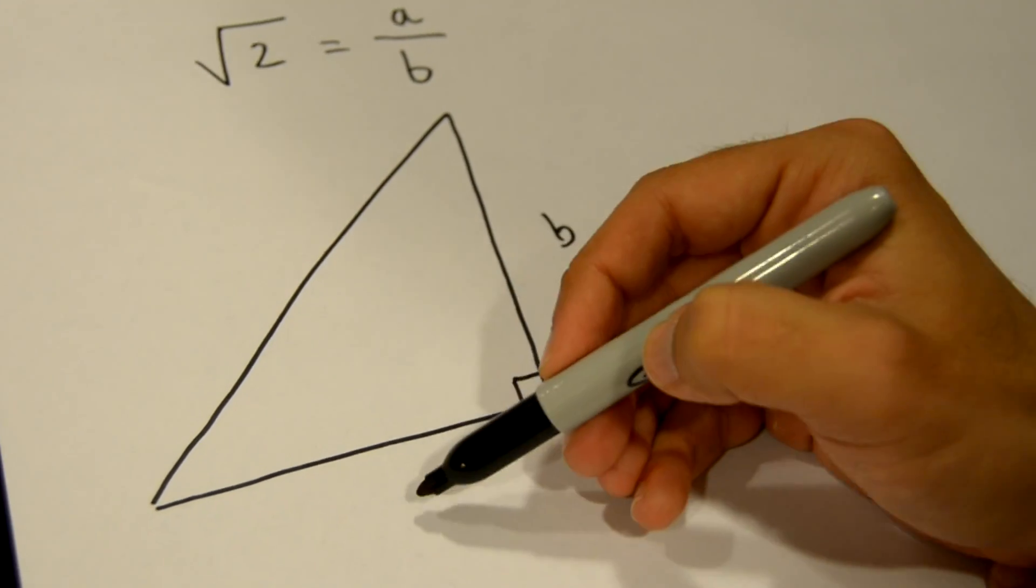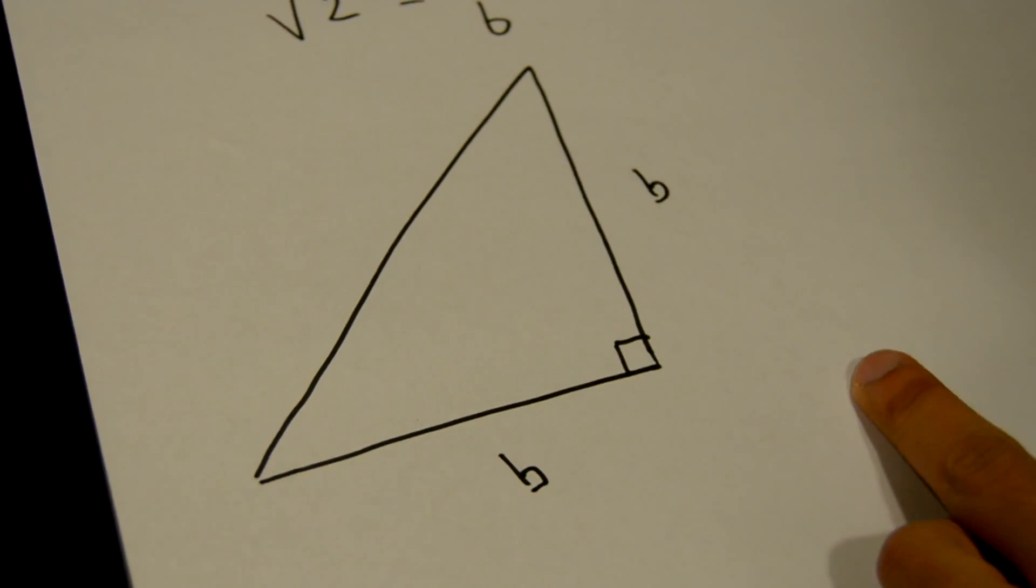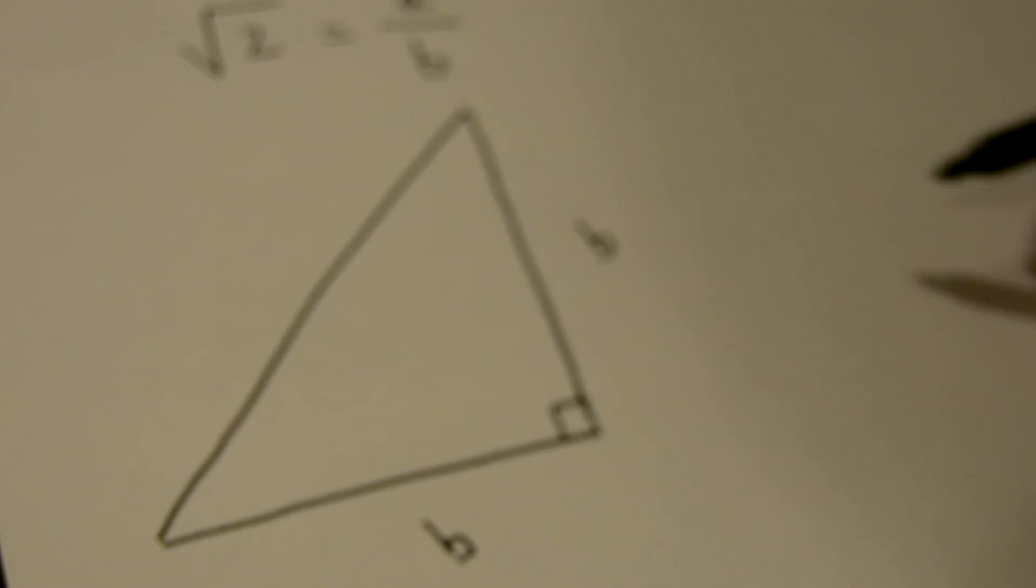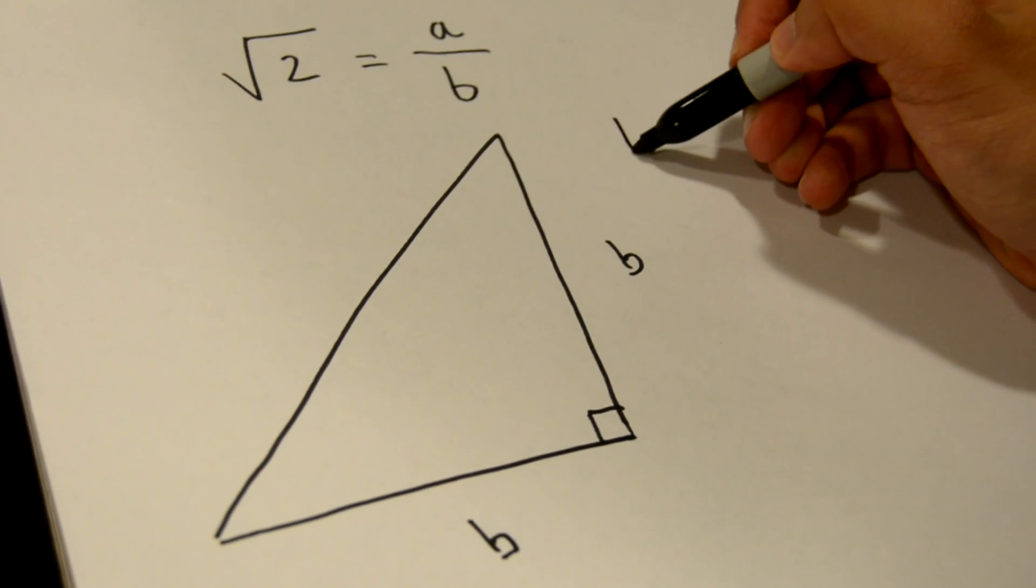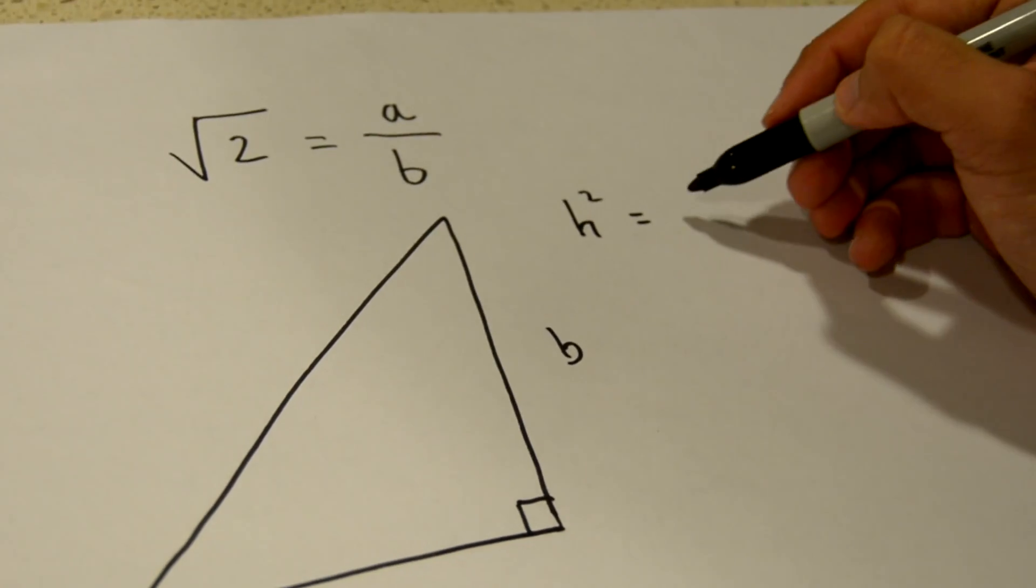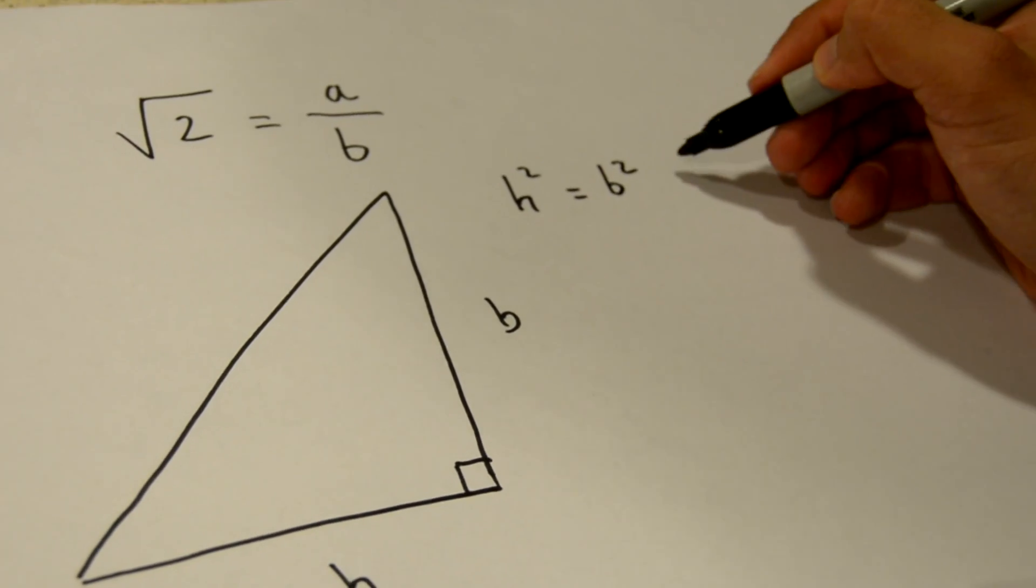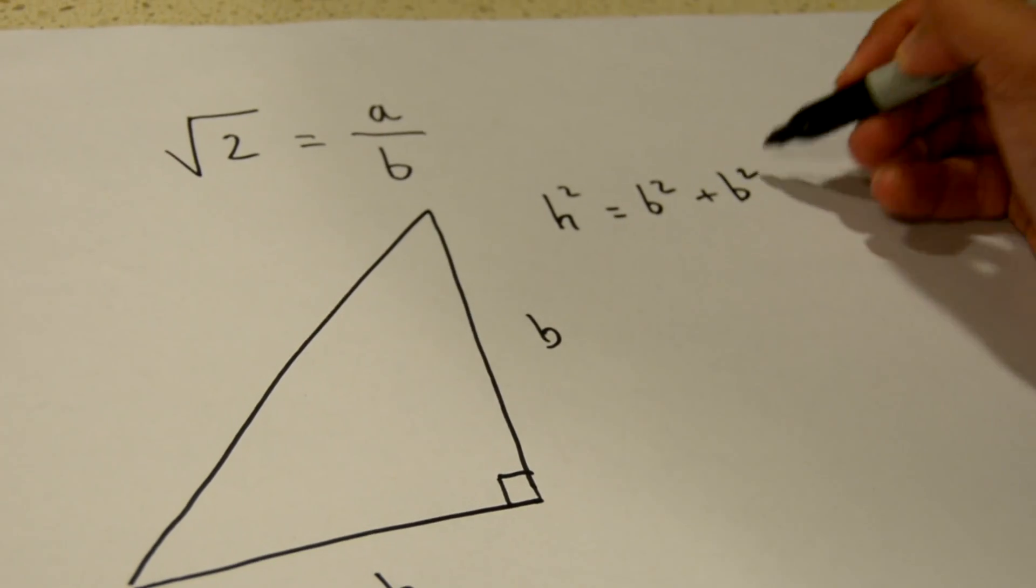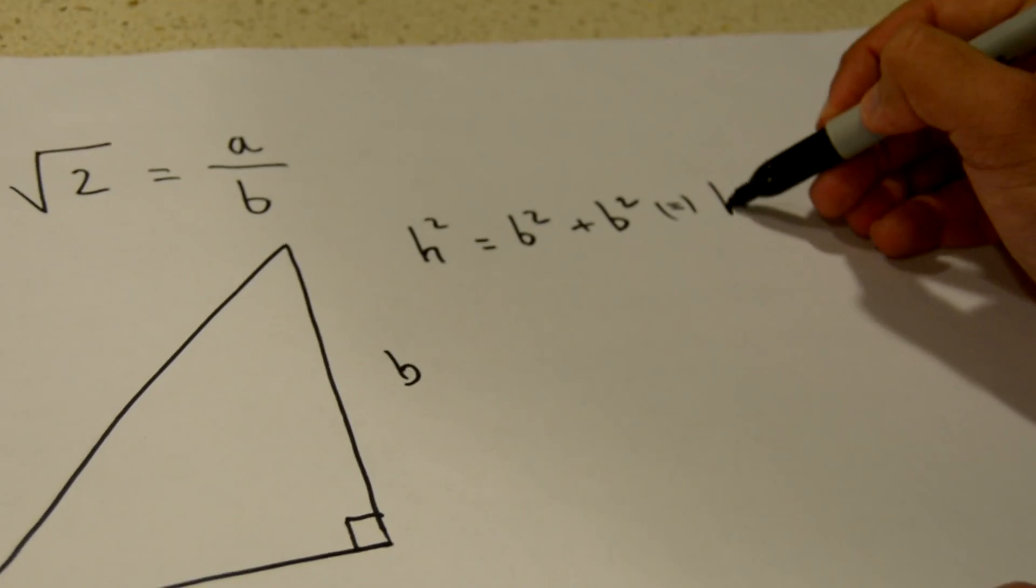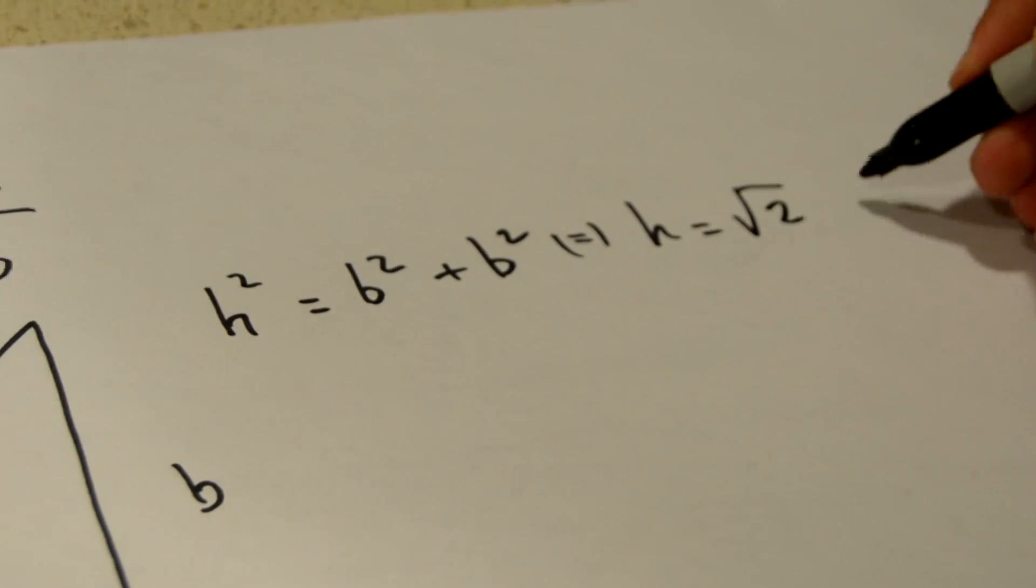and if we calculate the length of the hypotenuse h using the Pythagorean theorem, we see that h squared equals b squared plus b squared, and so h equals the square root of 2 times b,